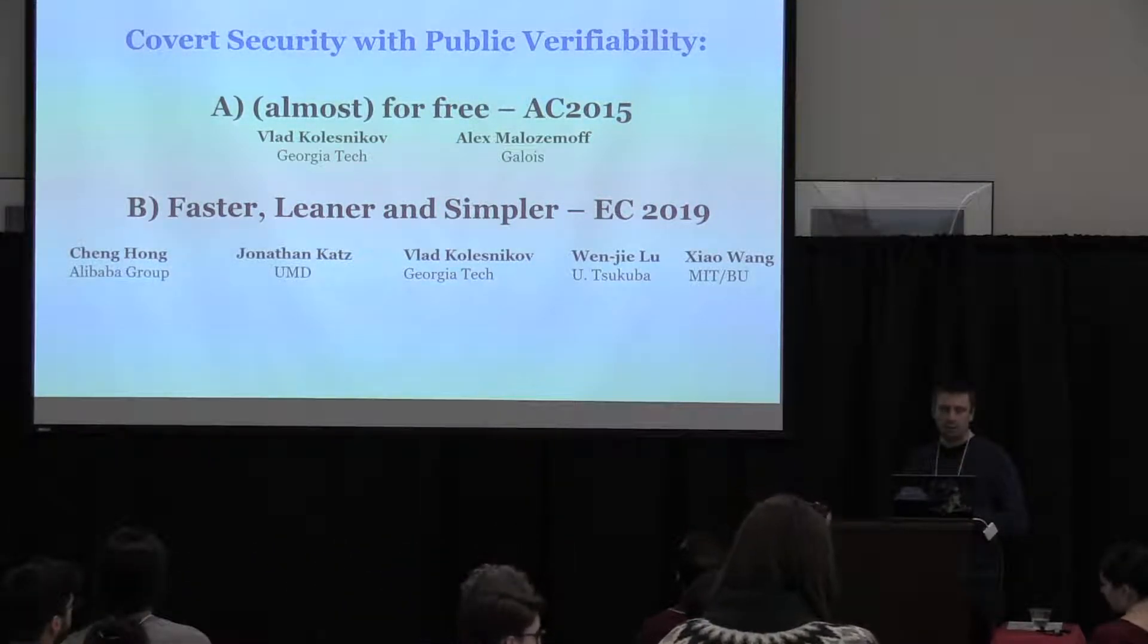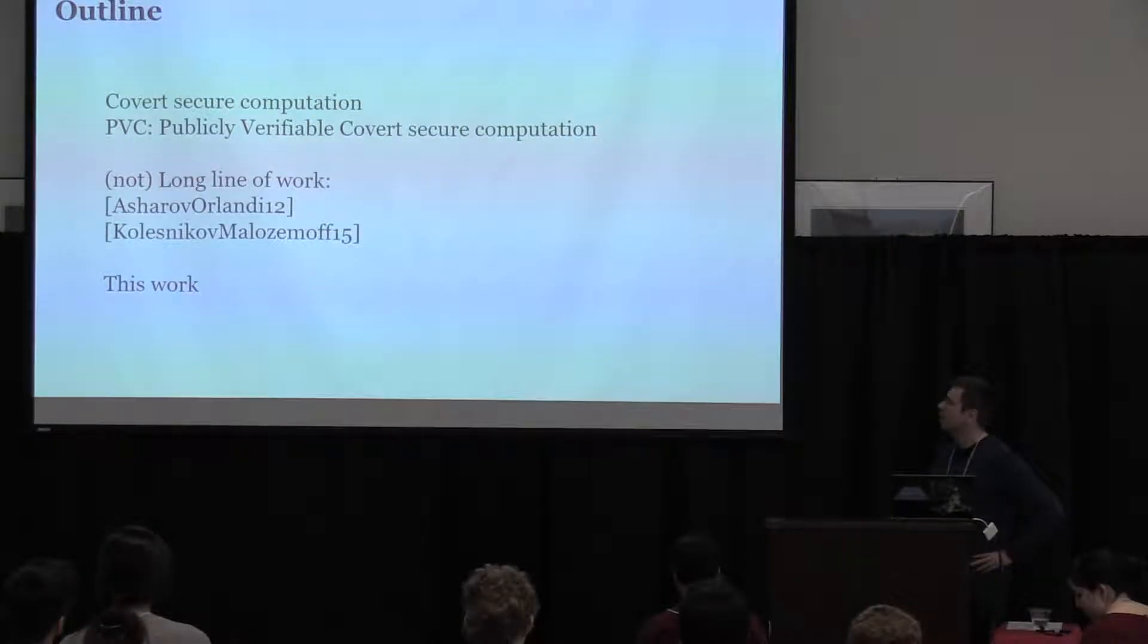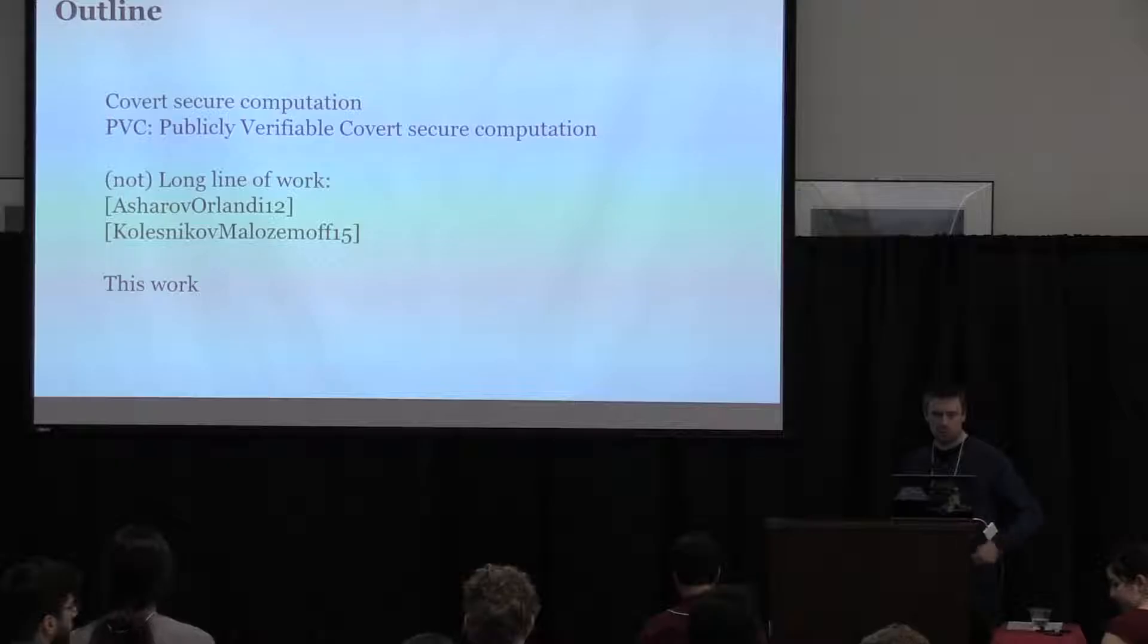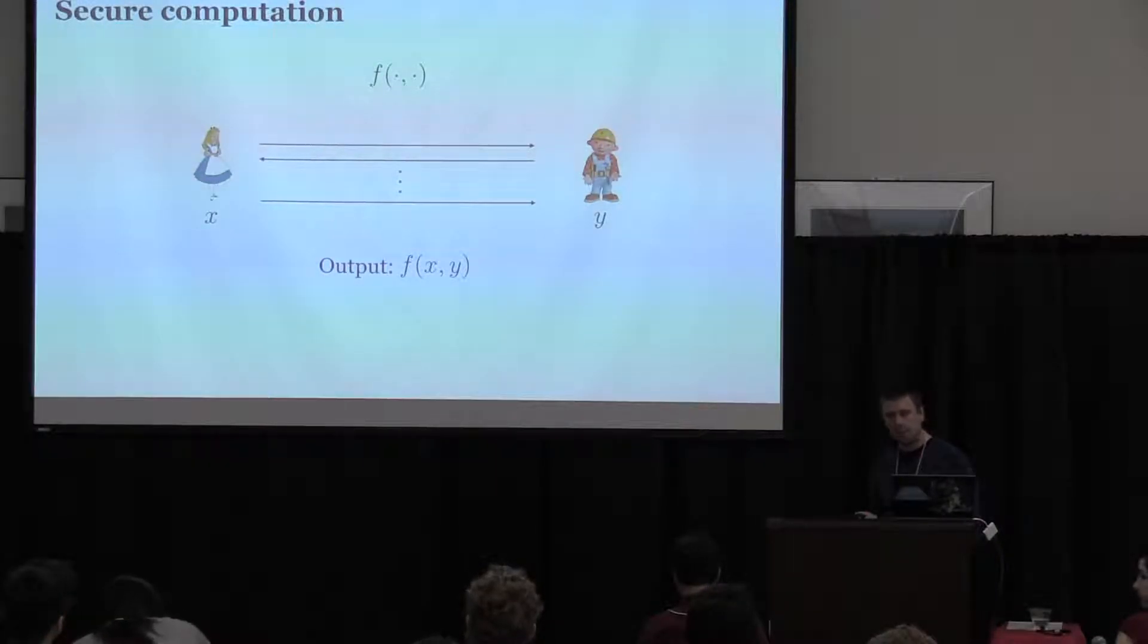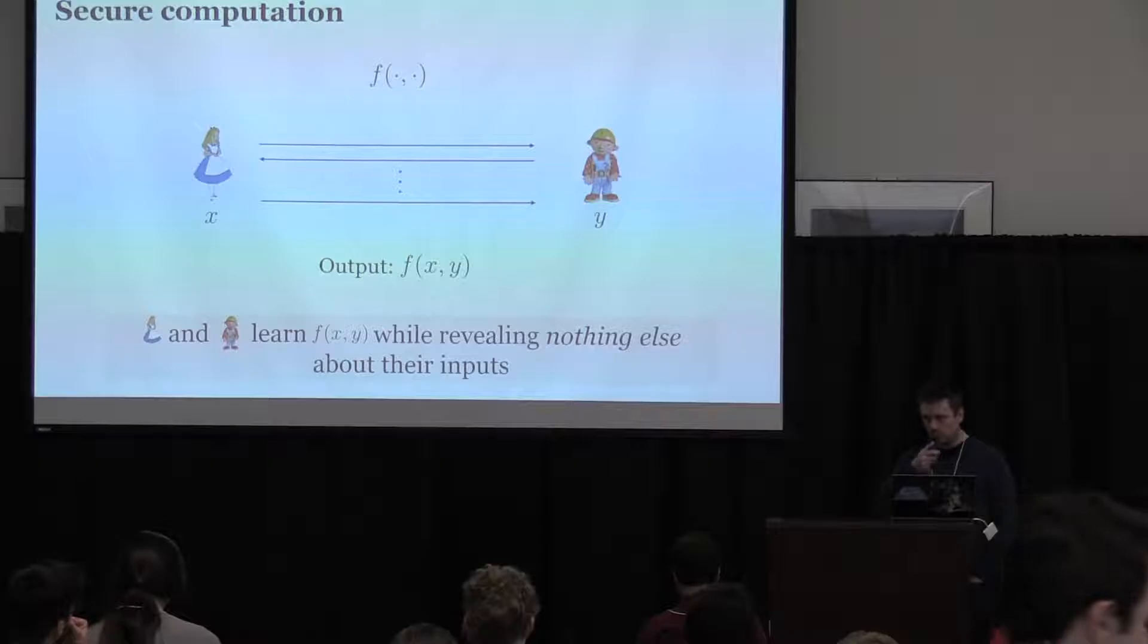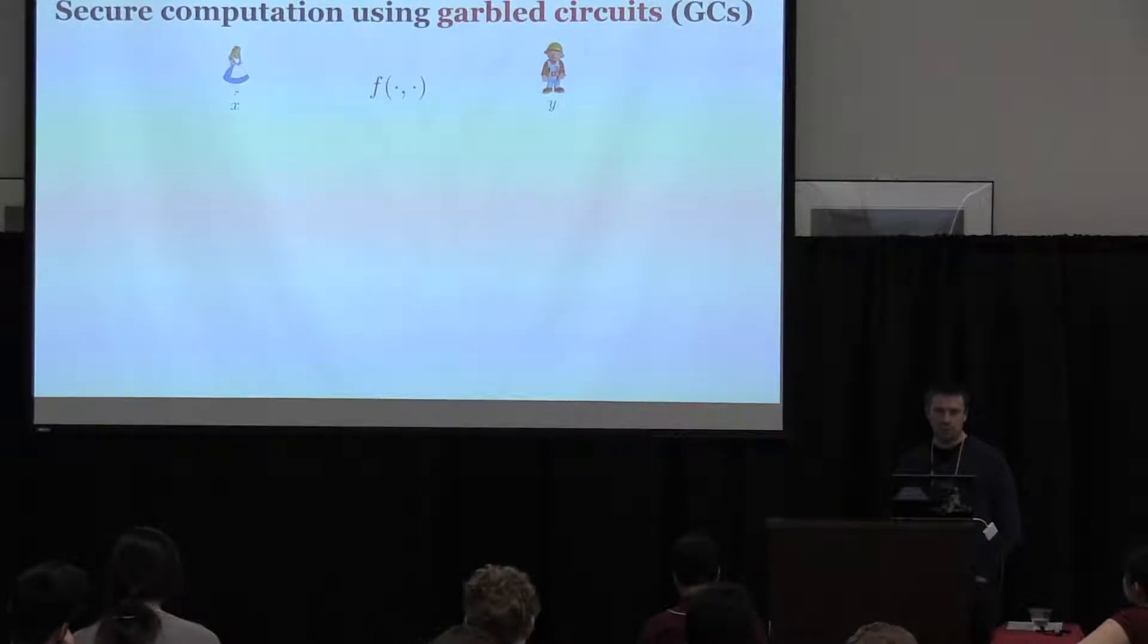So Covert Security, people know what it is. It's a slightly different model, and I'll explain it. There is not a very long line of work in this model. To me, it's a little bit surprising because I think the problem is really well motivated. So, it's obviously inside the area of secure computation. We know what it is. We want to compute the function without revealing the inputs.